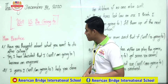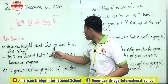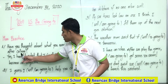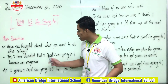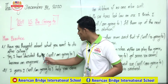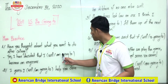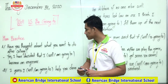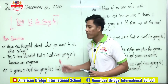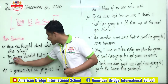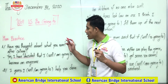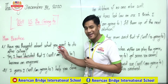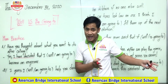Let's get started with number one together. 'Have you thought about what you want to do after college?' The answer: 'Yes, I have decided that I am going to become an engineer.' So — will or be going to? Look at the sentence: 'I have decided' — decided in the past already. So the answer is 'be going to,' because we have planned to do something in the future.